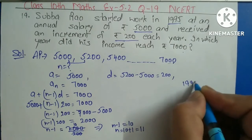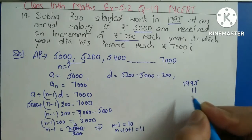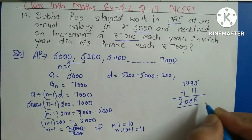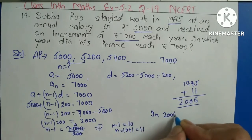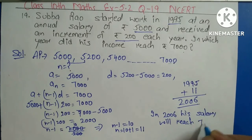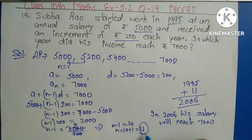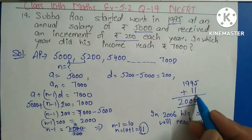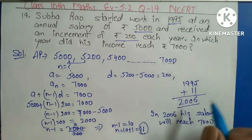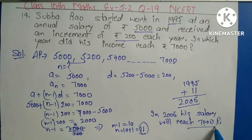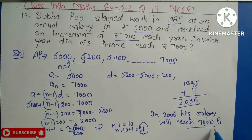Clear. Ab 1995 mein apna work start kiya tha. 11 years hamara N find out hua hai. 11 ko 1995 mein add karenge, to hamare paas aaya 2006. It means, in 2006 his salary will reach 7,000 rupees. N ki value jo hamare paas 11 aayi thi, aur 11 ko humne 1995 mein add kar diya — usne start kiya tha apna work 1995 mein. To hamare paas aaya 2006. In 2006, his salary will reach 7,000 rupees. Yeh mara answer aa gaya. Clear. To yeh mara question number 19 complete ho jaata hai. Next session mein start karenge isi exercise ka next question.